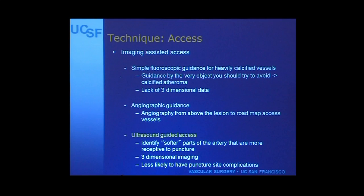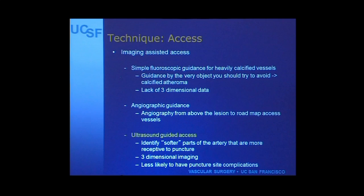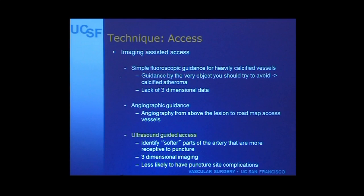You really need image-assisted access. The success of this technique is contingent upon not damaging your runoff. A lot of the earlier reports used simple fluoroscopic guidance, and since most of these patients have heavily calcified vessels, they would cannulate under direct fluoroscopy. Some people advocate doing an angiogram from the femoral sheath to roadmap the vessel, particularly for the perineal or if there's less calcium. But you can almost always use ultrasound - you have three-dimensional imaging, and just as in femoral angiography, you can identify the correct puncture site, a soft spot, a break between the calcium that you can safely cannulate to minimize your complication rate.